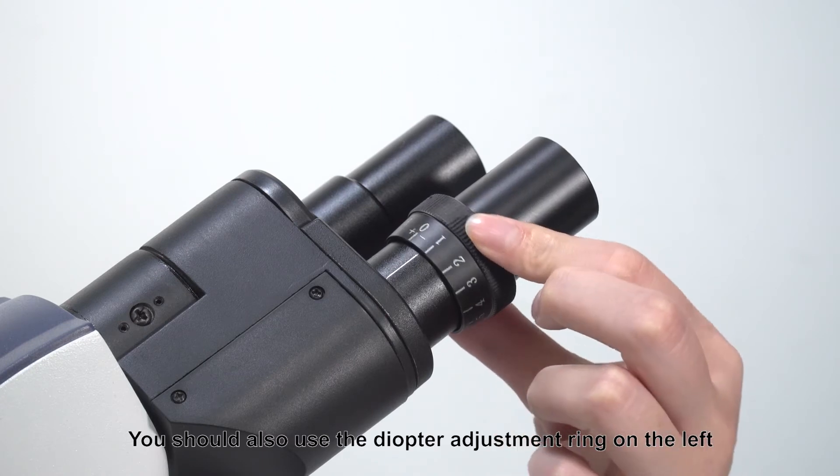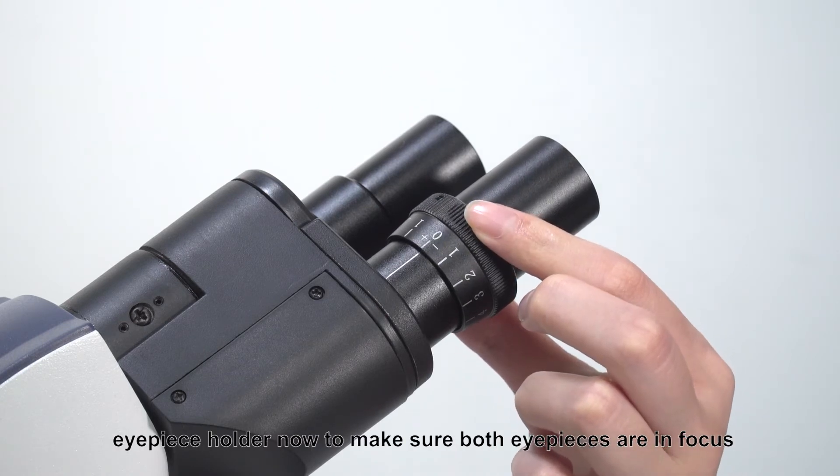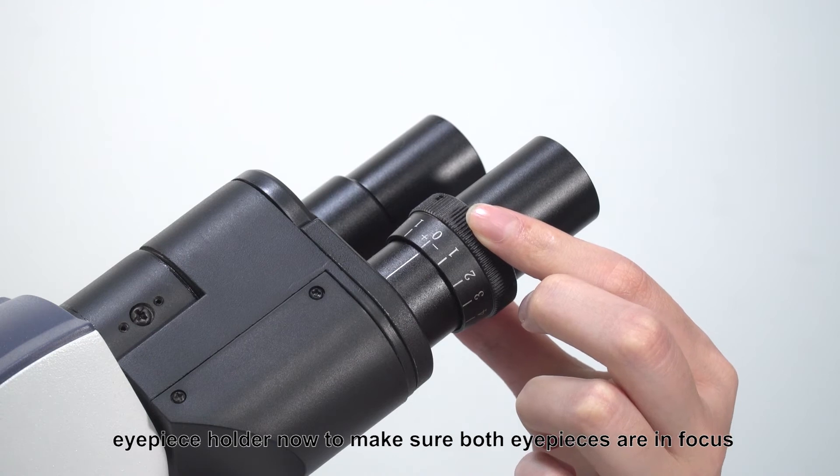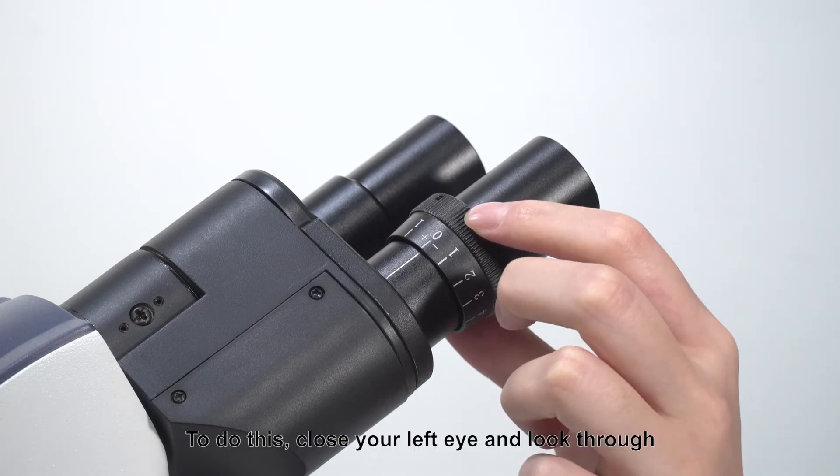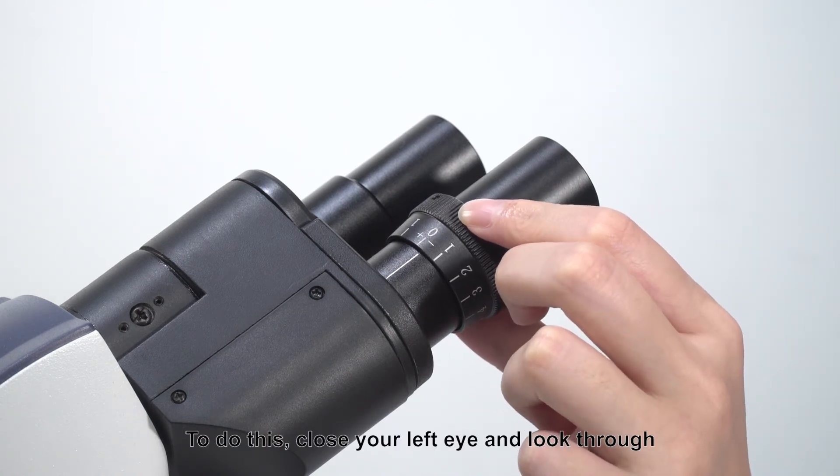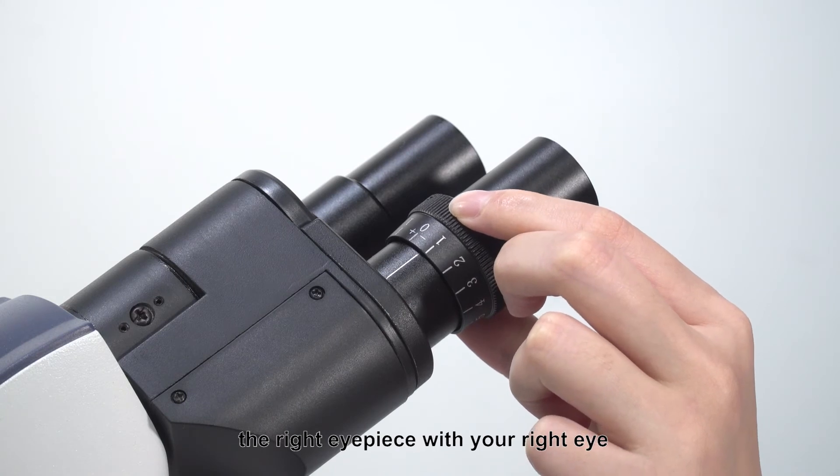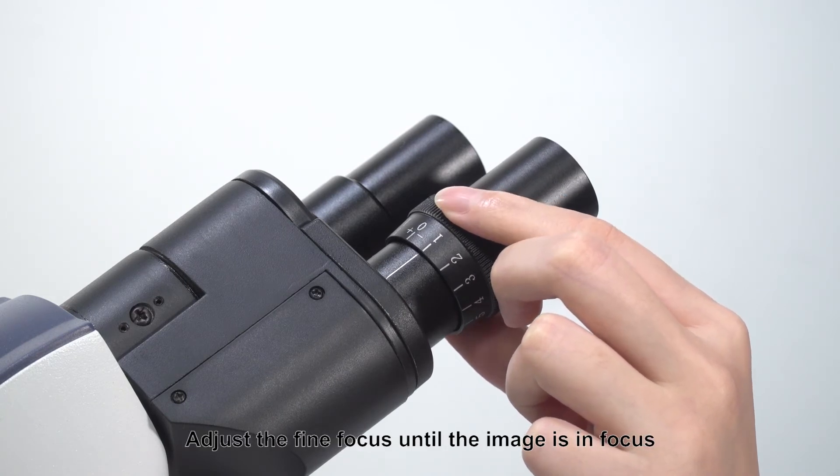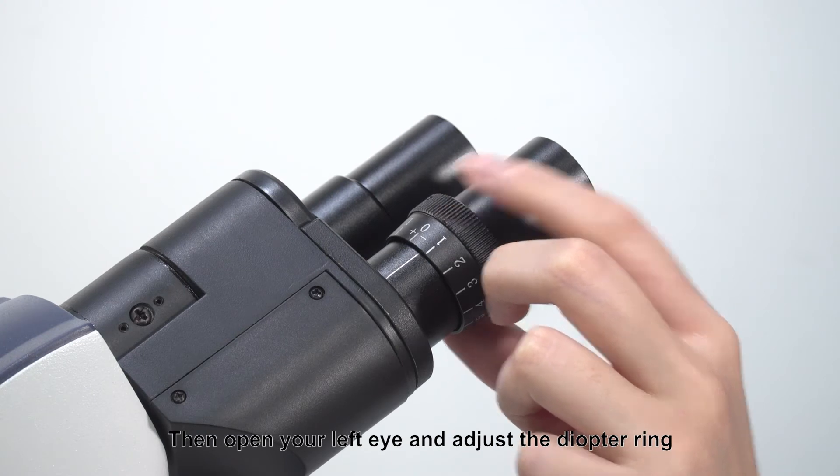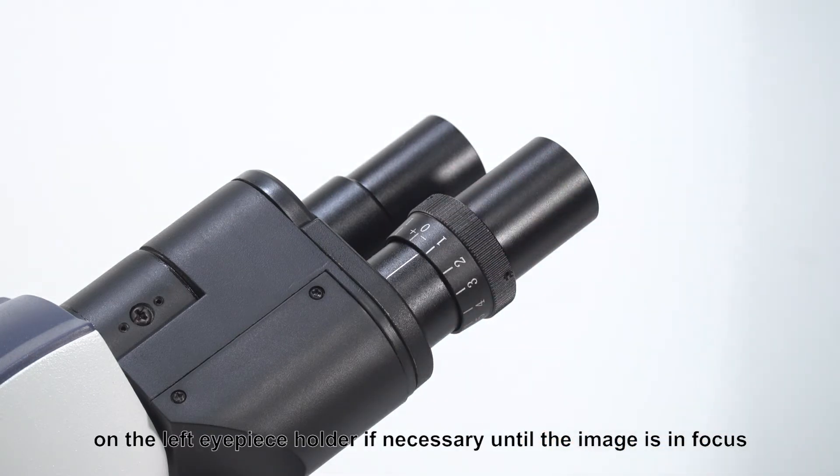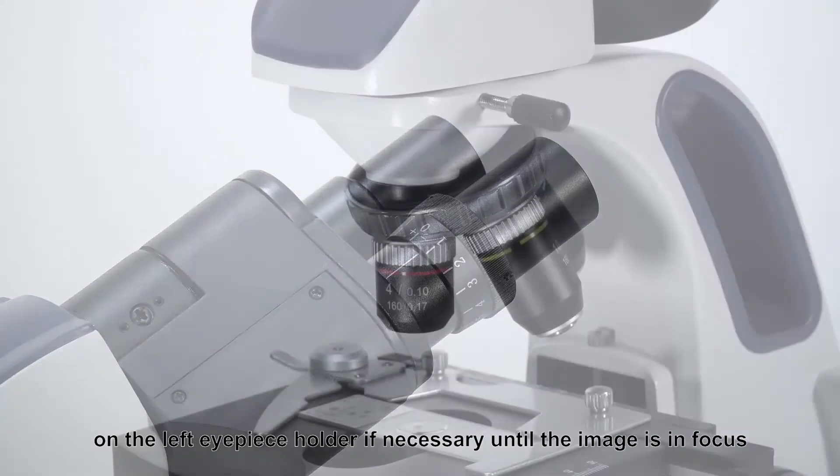You should also use the diopter adjustment ring on the left eyepiece holder now to make sure both eyepieces are in focus. To do this, close your left eye and look through the right eyepiece with your right eye. Adjust the fine focus until the image is in focus. Then open your left eye and adjust the diopter ring on the left eyepiece holder if necessary until the image is in focus.